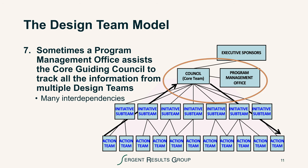Sometimes the programmatic or systemic change is so huge that a program management office is required to track all the information from multiple design teams. We have seen as many as 135 different design teams working on improving a system that was in great disarray, and a program management office helps track all the various interdependencies.